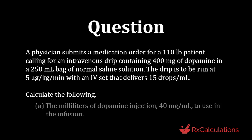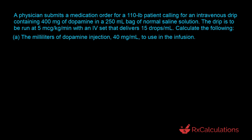Part A says: calculate the milliliters of dopamine injection — which has a concentration of 40 milligrams per milliliter — to use in the infusion. The question is asking for the volume, so you're going to use this injection to supply the 400 milligrams of dopamine that you want to put in the bag.